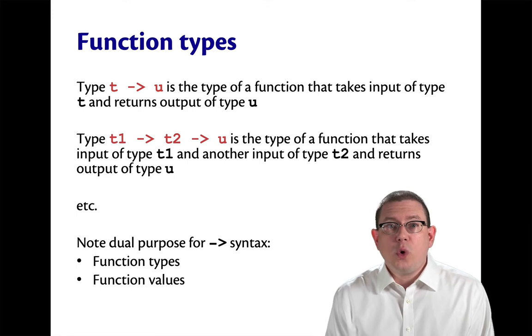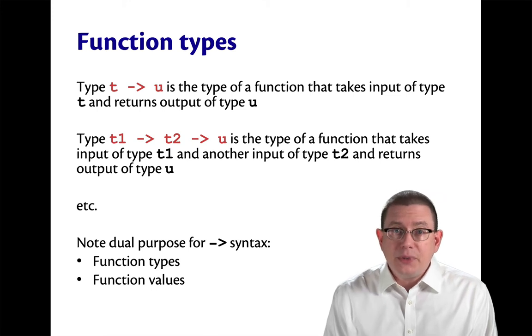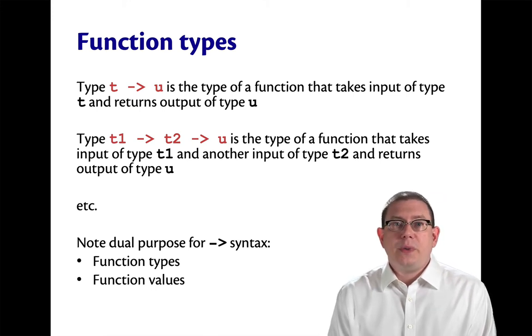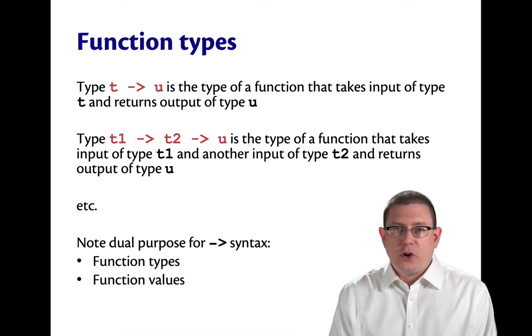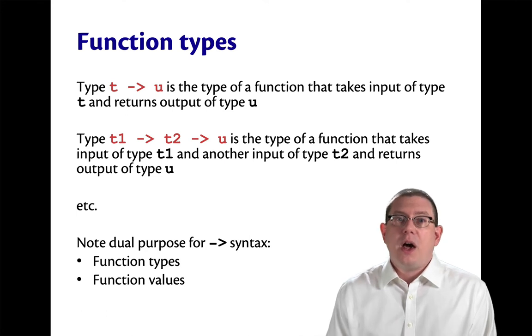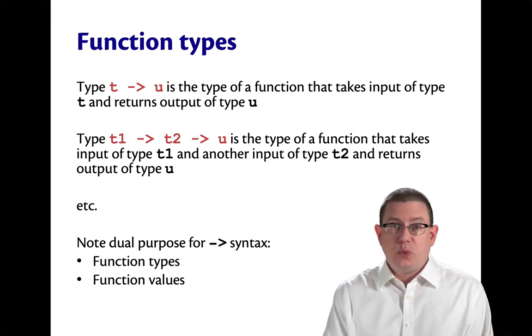So notice there's a kind of dual purpose going on in the language here for the arrow syntax. It's being used for function types, and it's also being used for function values when we use the anonymous function keyword fun. And that's kind of nice because it's showing us that these two things are really closely related. They're both a notion of transformation, of transforming an input or maybe multiple inputs into an output.